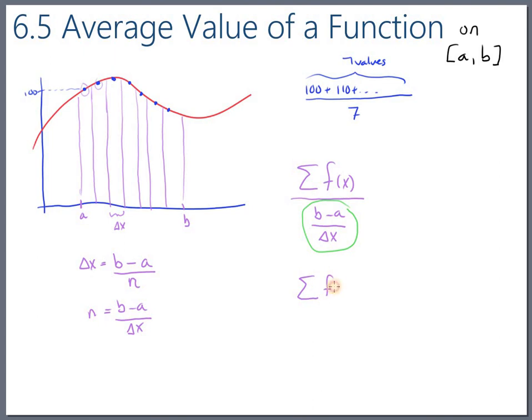So we'll have the summation of all the function values, all seven of them, or all ten of them, or all million of them. And then flipping the fraction on the bottom, I'm going to put the delta x. Okay, so there's the fraction flipped and multiplied. And I'd like to point out that b minus a is a constant. So I can factor that out front. So let me put one over b minus a out front.